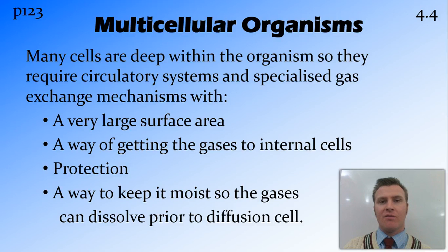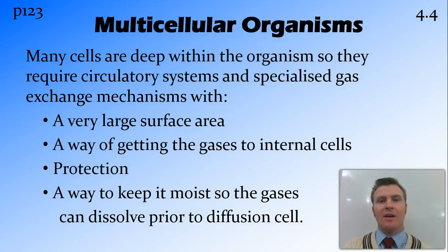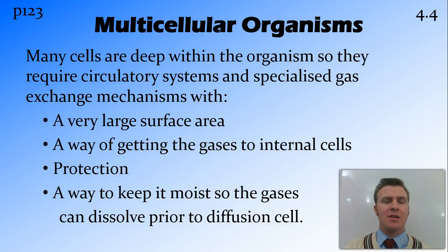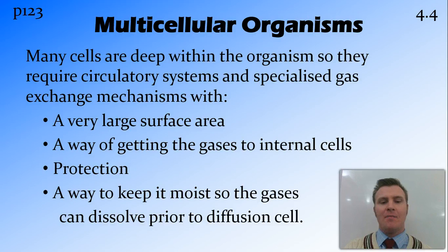They firstly need a very large surface area so that the gases can get from the air into the organism. They need a way of getting these gases to the internal cells — this might be a circulatory system in mammals, or the tracheoles being in contact with all the cells inside an insect. They need protection, as these gaseous exchange systems can be quite delicate. They also need a way of keeping moist so that the gases can dissolve into that moist layer prior to diffusion into the organism.